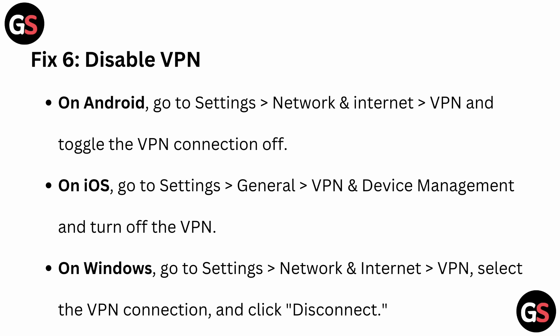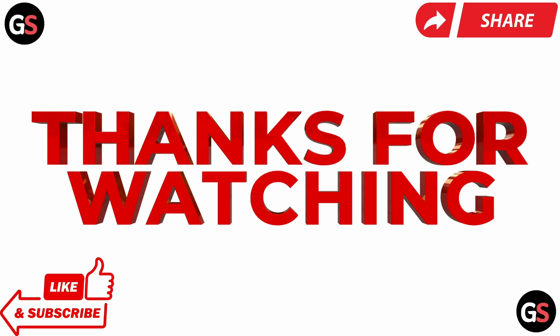Fix six: disable VPN. On Android, go to Settings, then Network and Internet, and toggle the VPN connection off. On iOS, go to Settings, then General, then VPN and Device Management, and turn off the VPN. On Windows, go to Settings, then Network and Internet, then VPN, select the VPN connection, and click Disconnect. If you found this video helpful, don't forget to like, share, and subscribe for more tech tips and tutorials. Goodbye!